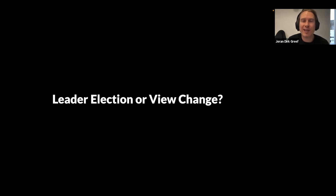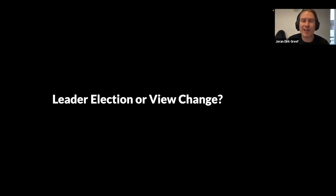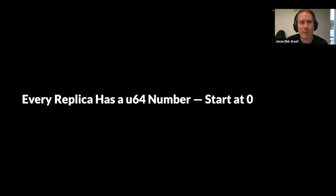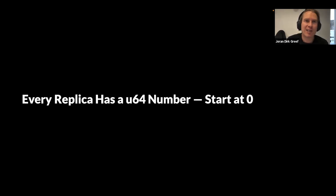A better way to think about consensus starts with four words: isolate the old primary. If you can get the majority of a cluster to do this, you've solved the hardest part. How do you isolate the old primary? The answer is Cowling and Liskov's deterministic view change. Give each replica a U64 number, starting at zero. Make the primary a function of this number modulo the number of replicas — that's your leader election, right there. To isolate the old primary, all you have to do is ping a majority of replicas, tell them to bump their numbers and ack back to you. Once you know a majority have bumped their numbers past the number that points to the old primary, you've isolated the old primary.